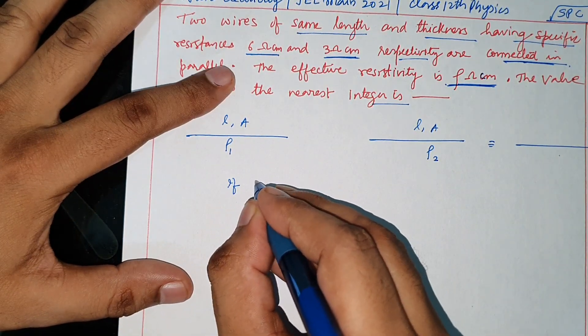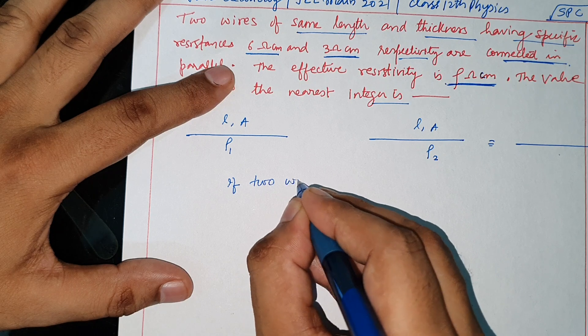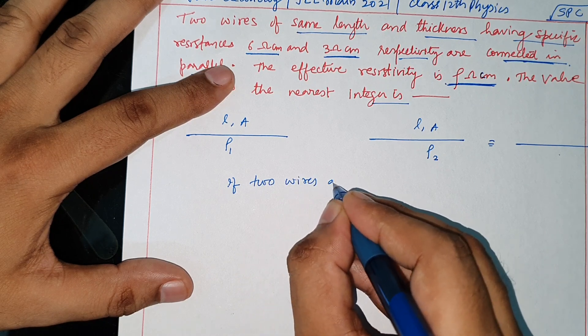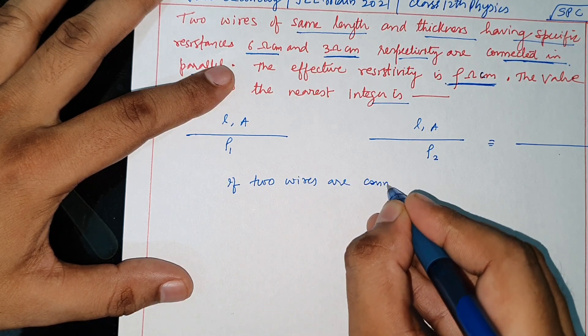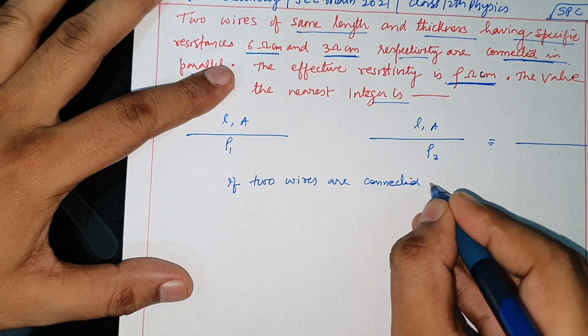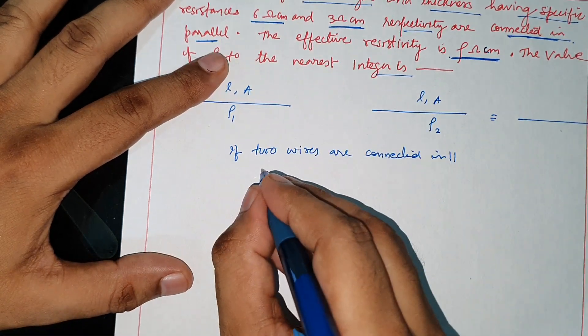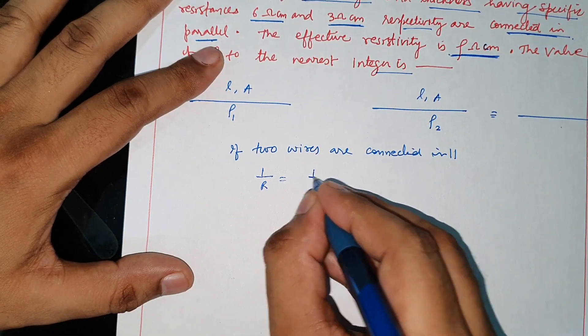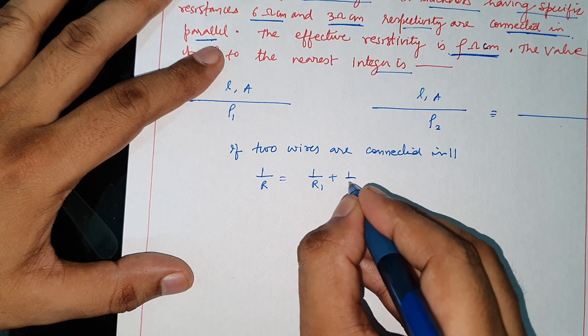If both two wires are connected in parallel, one upon R equal to one upon R1 plus one upon R2.